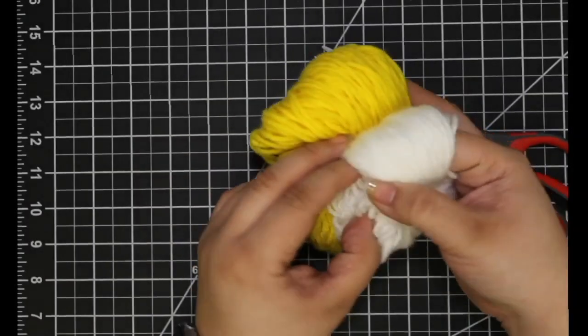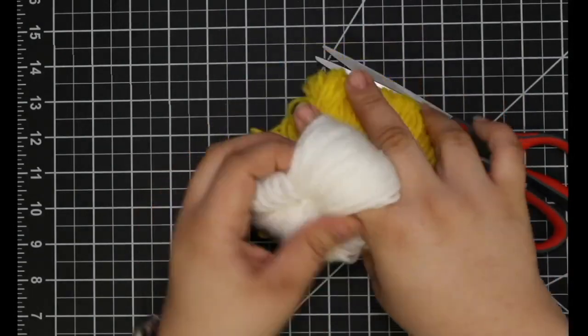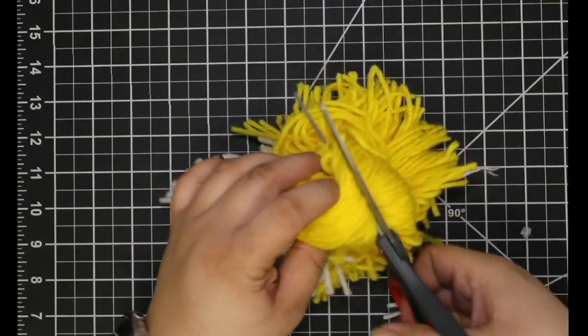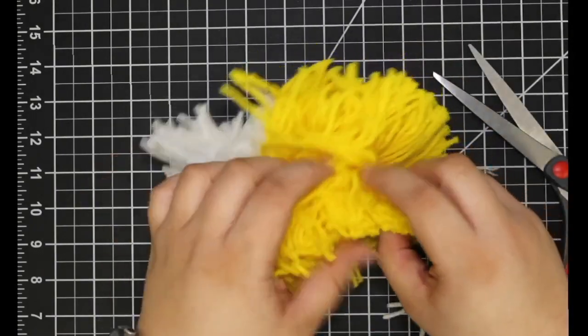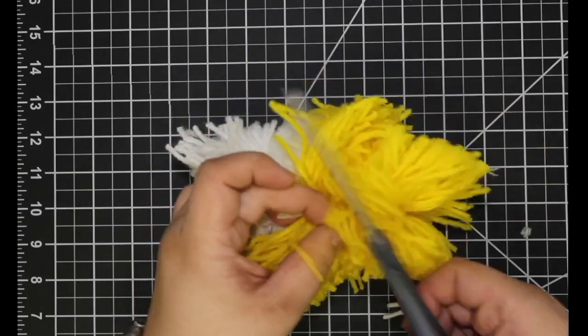Next, grab a pair of scissors and cut the loops of the pom-pom in half. Use your finger or the tip of the scissors to reshape the middle of the loop. Once you have cut through, you can go back and cut any remaining loops you may have missed. Repeat this process for all the loops.